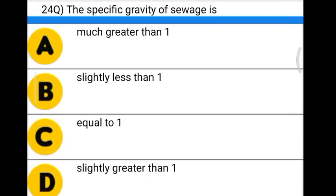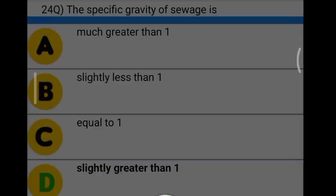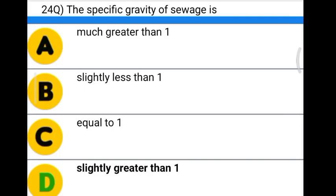Next question: the specific gravity of sewage is — Option A: much greater than 1. Option B: slightly less than 1. Option C: equal to 1. Option D: slightly greater than 1. The correct answer is option D, slightly greater than 1.